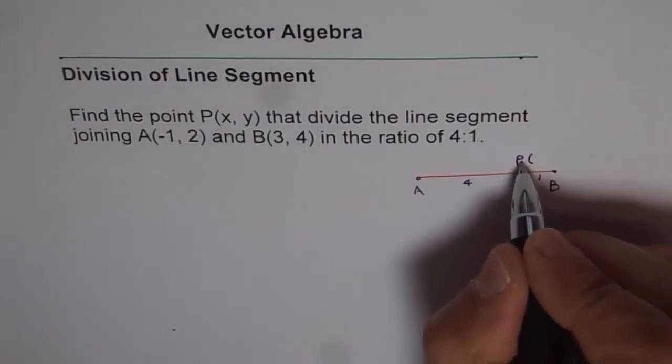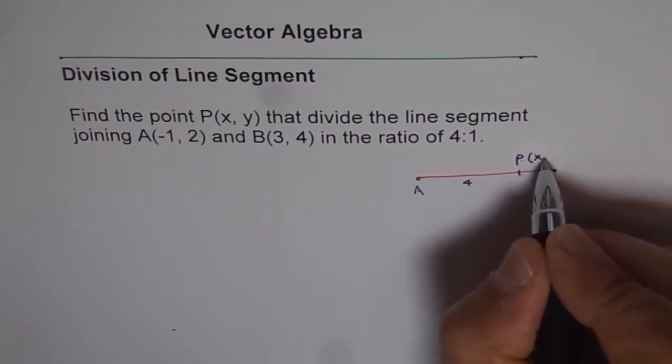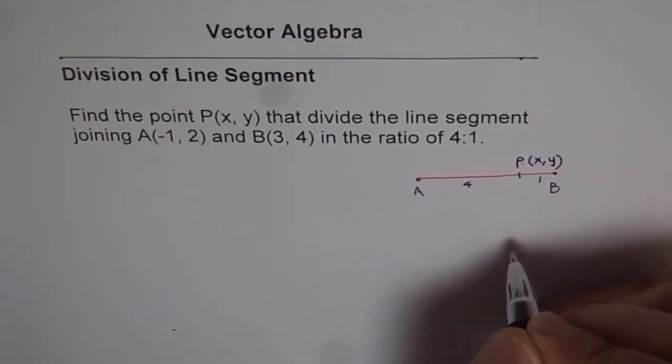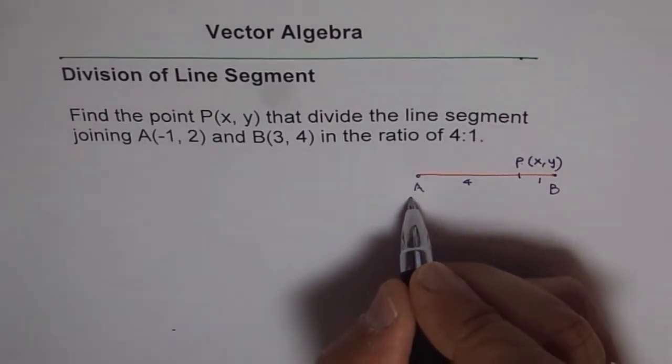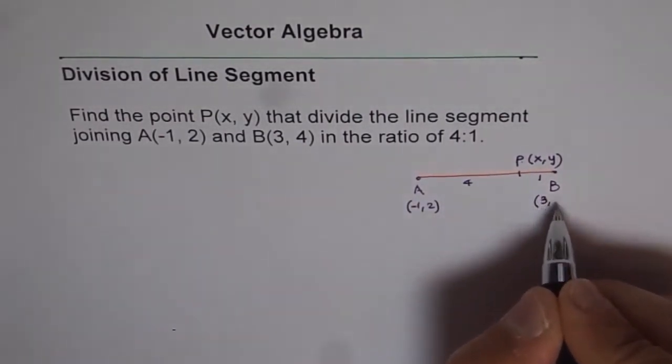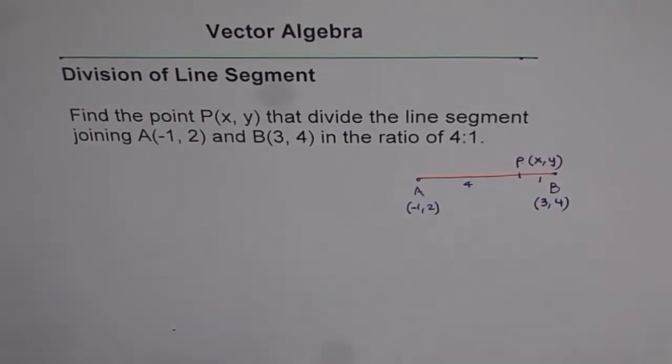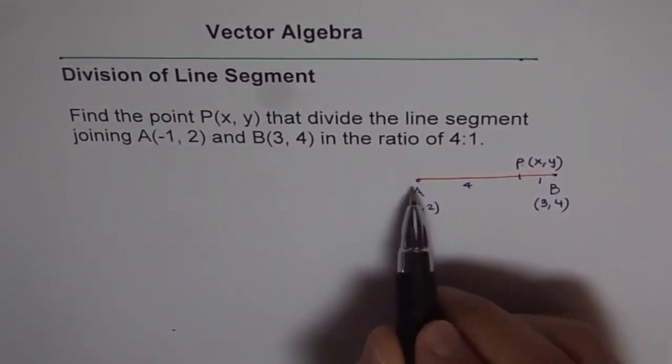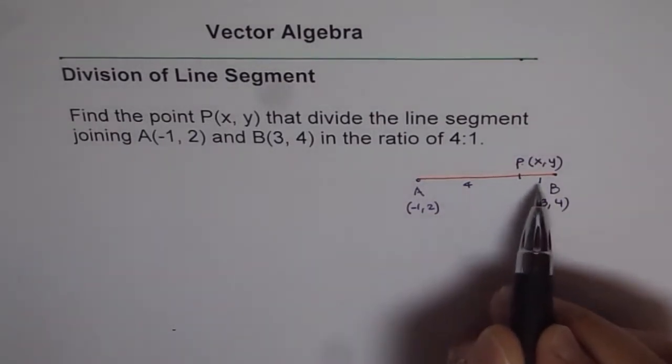And we need to find coordinates of this point P and we are assuming them to be X, Y for the moment. A is given to us as minus 1, 2 and B is the point 3, 4. So since P divides AB in the ratio of 4 to 1,